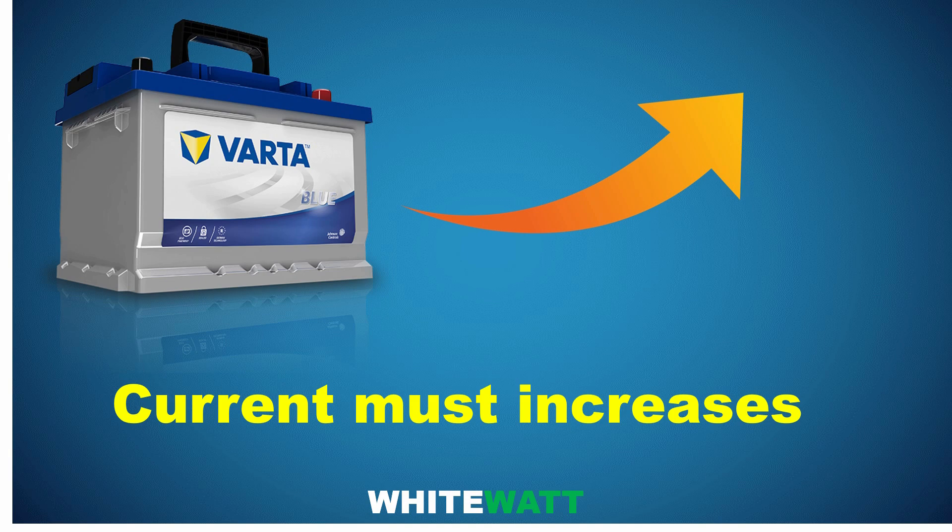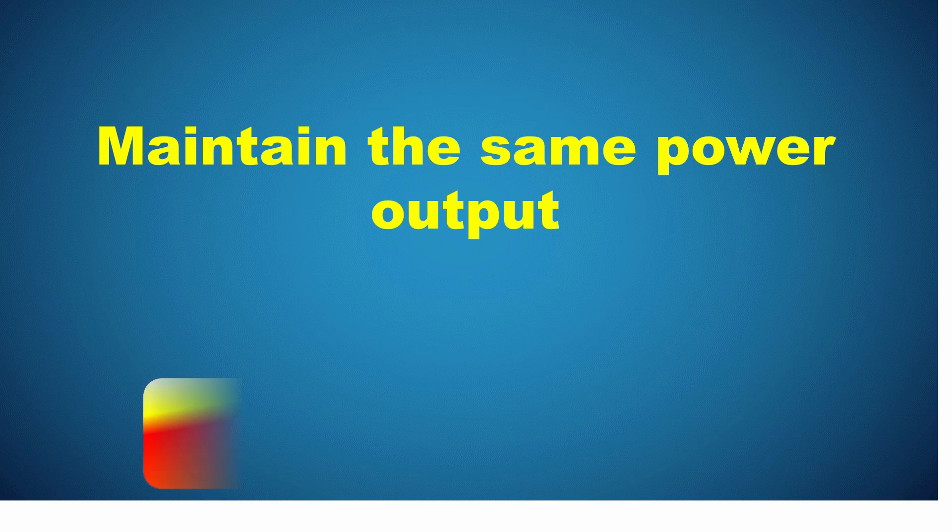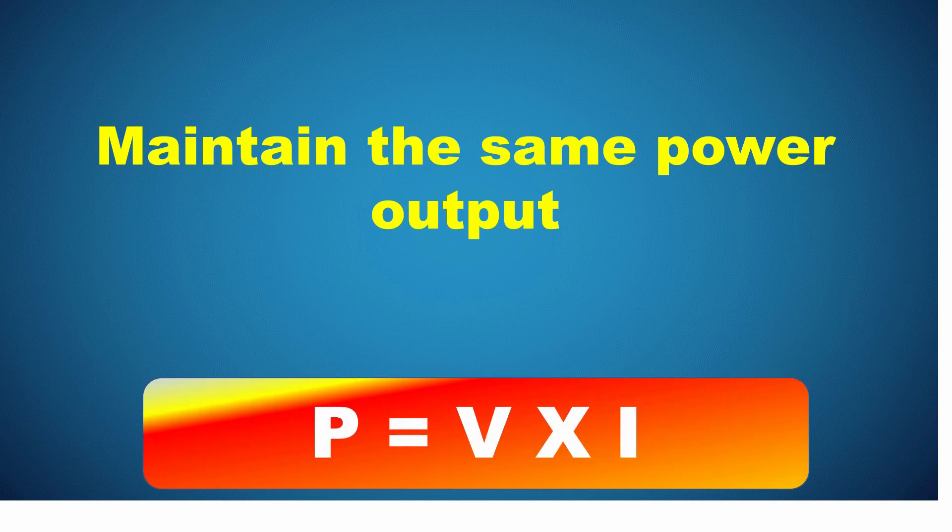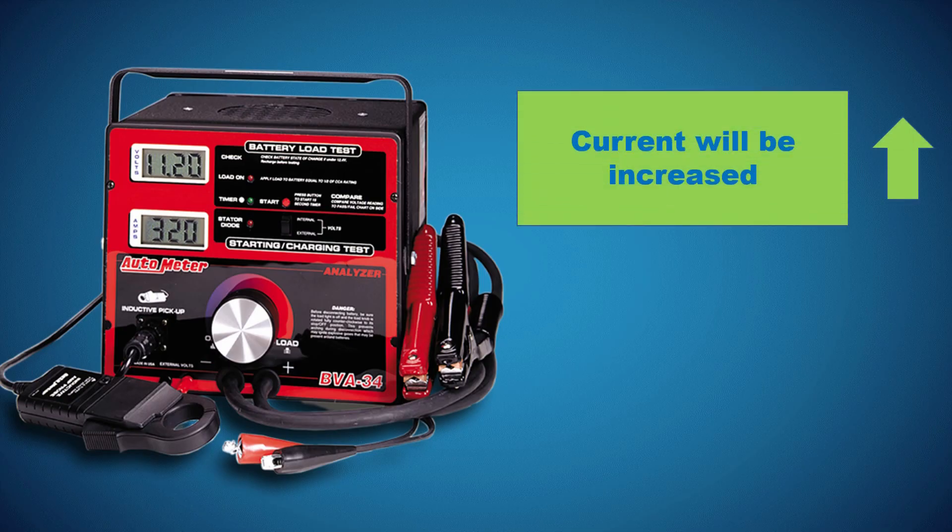So now you understand: when a battery voltage decreases, the load current must increase to maintain the same power output according to the power equation P = V × I. This is why you observe the load current going upward when the battery voltage goes downward.